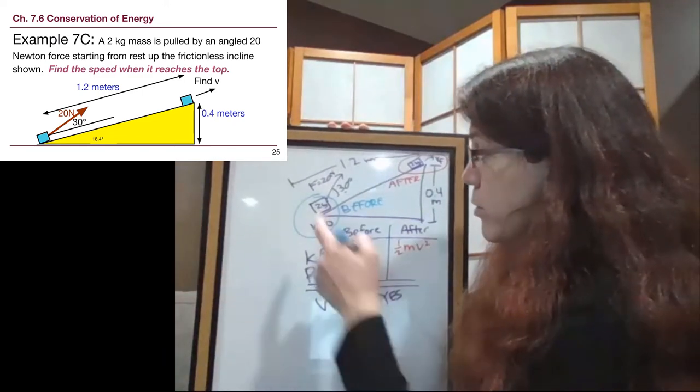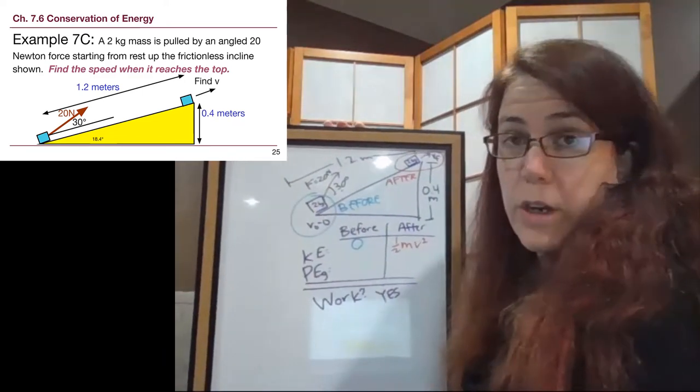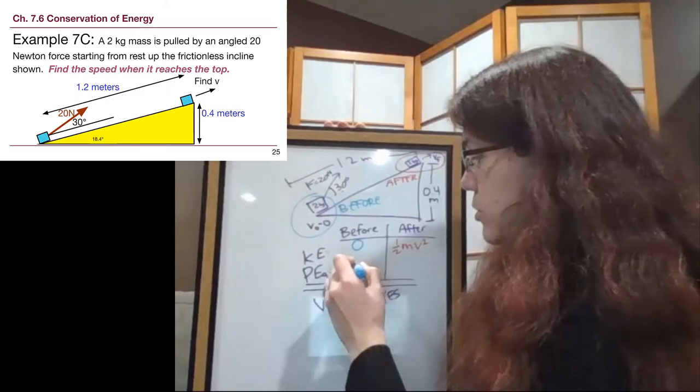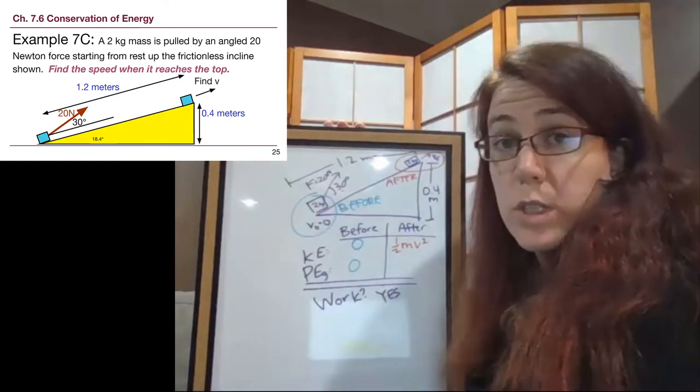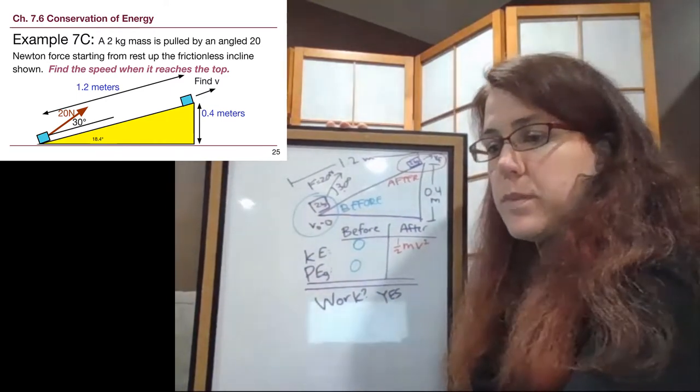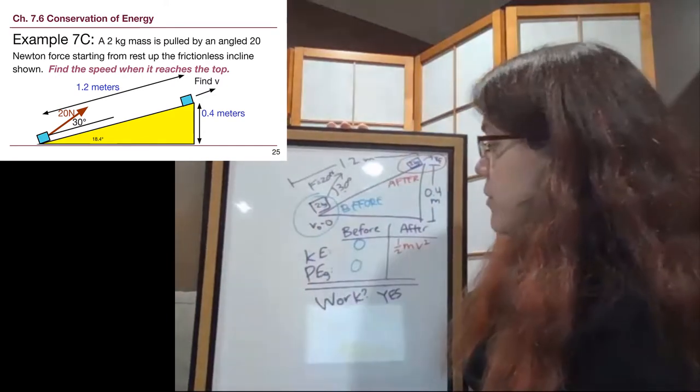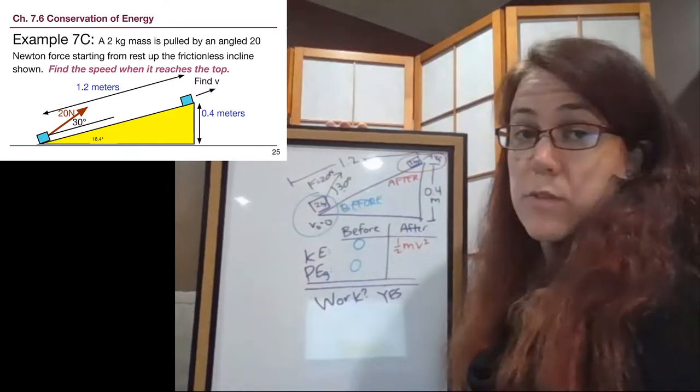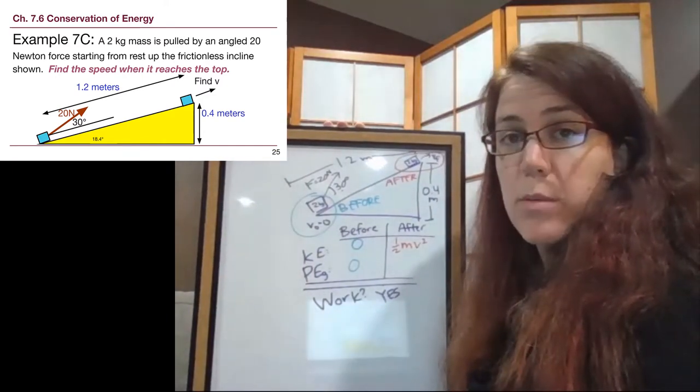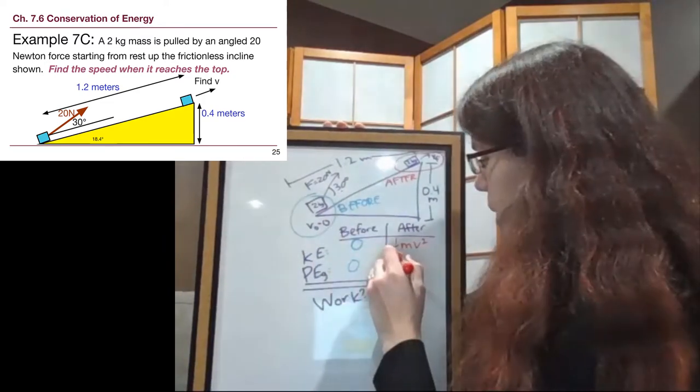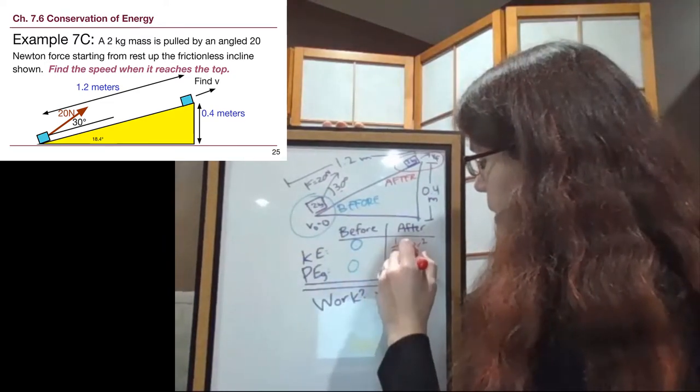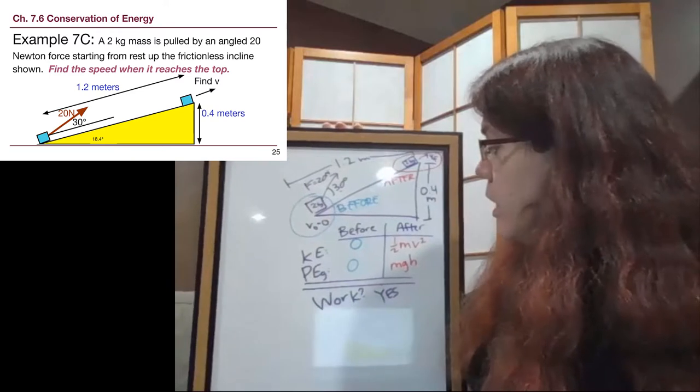At the beginning of the problem, we ask ourselves, are we higher than we are at other points in the problem? And the answer is no. At the beginning of the problem, we're at the bottom of the ramp. At the end of the problem, in the after column, we can ask ourselves, are we higher than at other points in the problem? And yes, we are. We're at the top of the ramp. We have M, G, H.